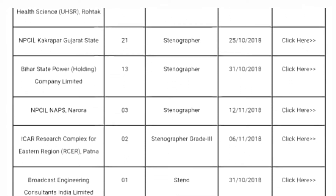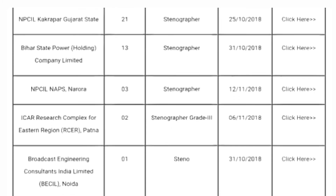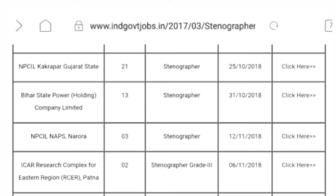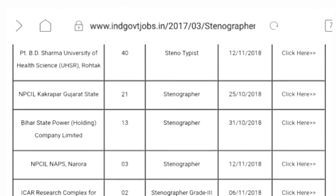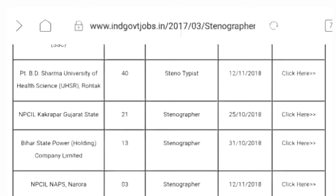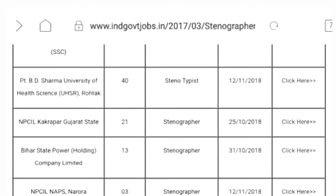These fees are 100 rupees. General and OBC categories are 100 rupees. Reserved categories have a fee exemption.